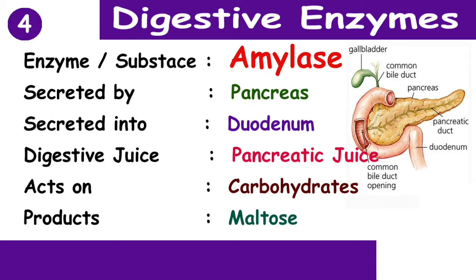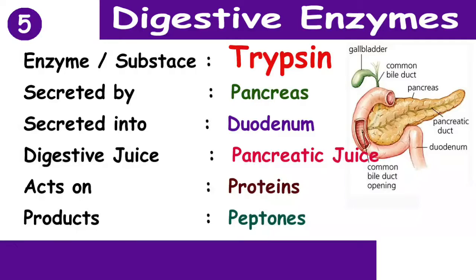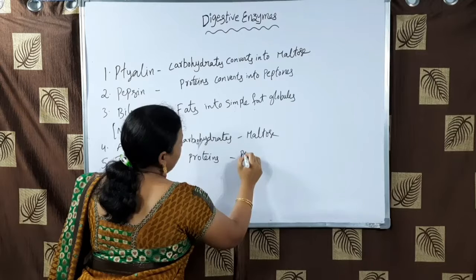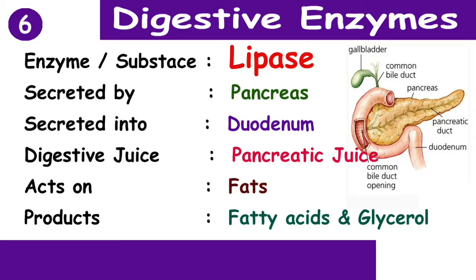The fourth one is amylase, which is secreted by the pancreas, secreted into the duodenum, and the digestive juice is pancreatic juice. It acts on carbohydrates and converts them into maltose sugars. The fifth one is trypsin — also secreted by the pancreas into the duodenum in pancreatic juice. It acts on proteins and converts the proteins into peptones.